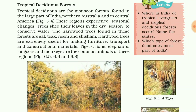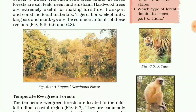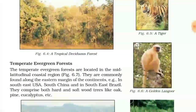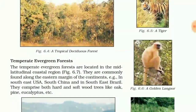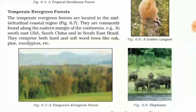Tiger, lion, elephant, langur, and monkey are the common animals of tropical deciduous forest regions.